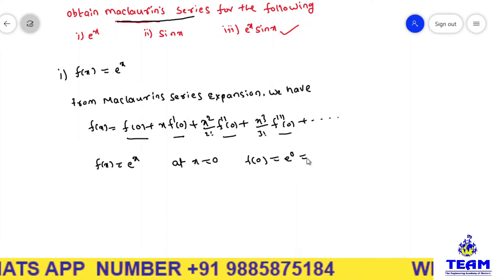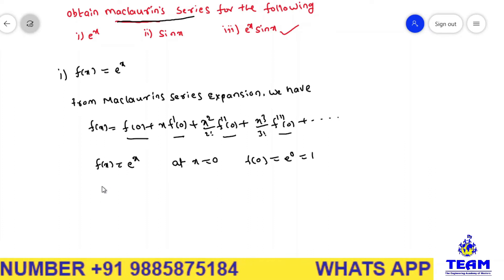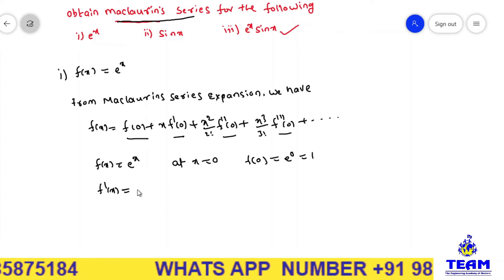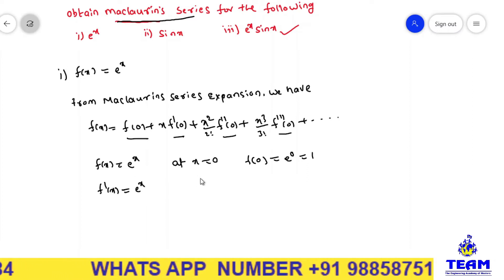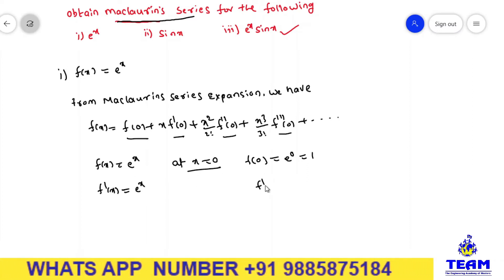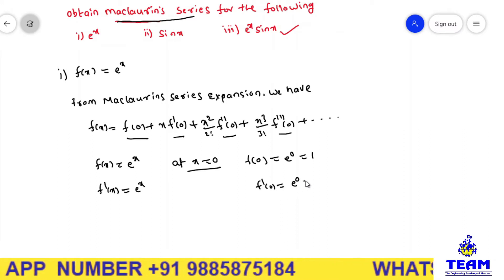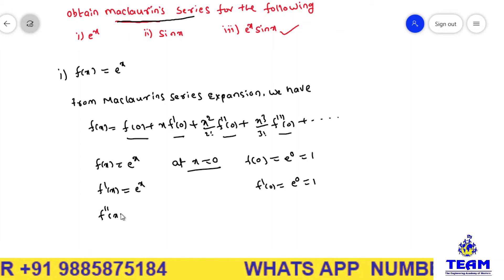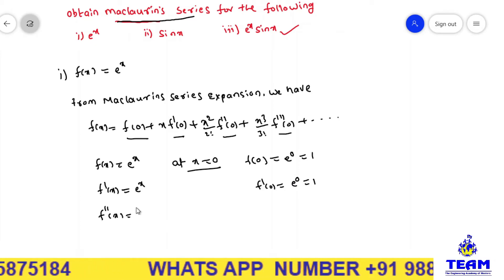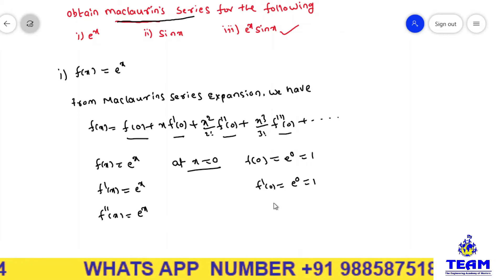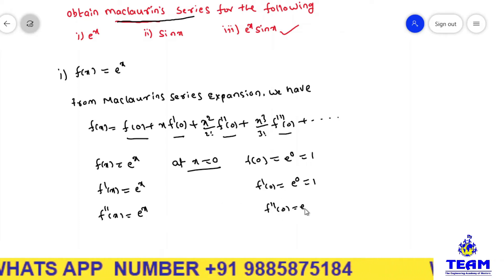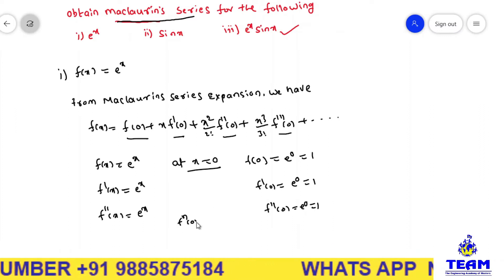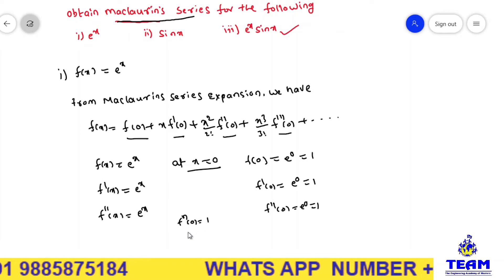Differentiating f(x) with respect to x, f'(x) = e^x. At x = 0, f'(0) = e^0 = 1. Next, f''(x) = e^x, so at x = 0, f''(0) = e^0 = 1. Remember friends, up to the nth derivative, whatever it may be, we are getting 1 only at x = 0.